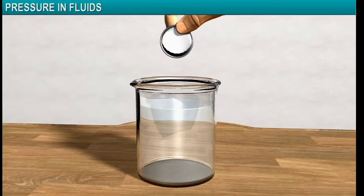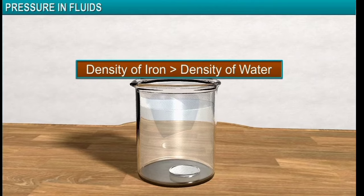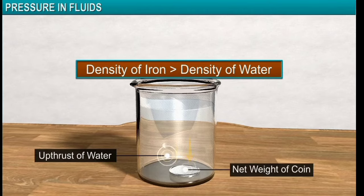On the other hand, the iron coin sinks because the density of the iron is higher than the density of water. Therefore, the upthrust of water on the metal coin is not able to overcome the net weight of the coin.